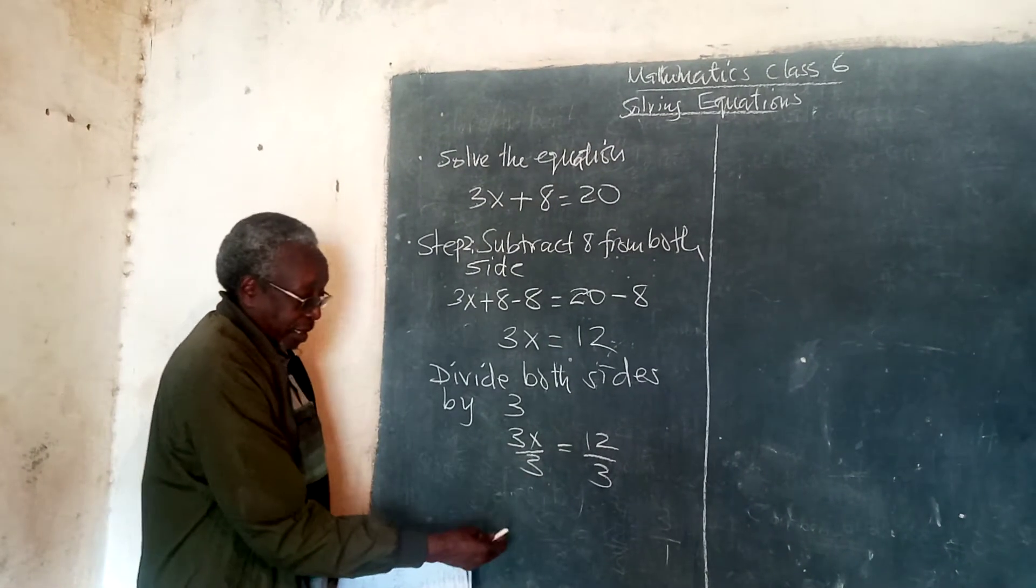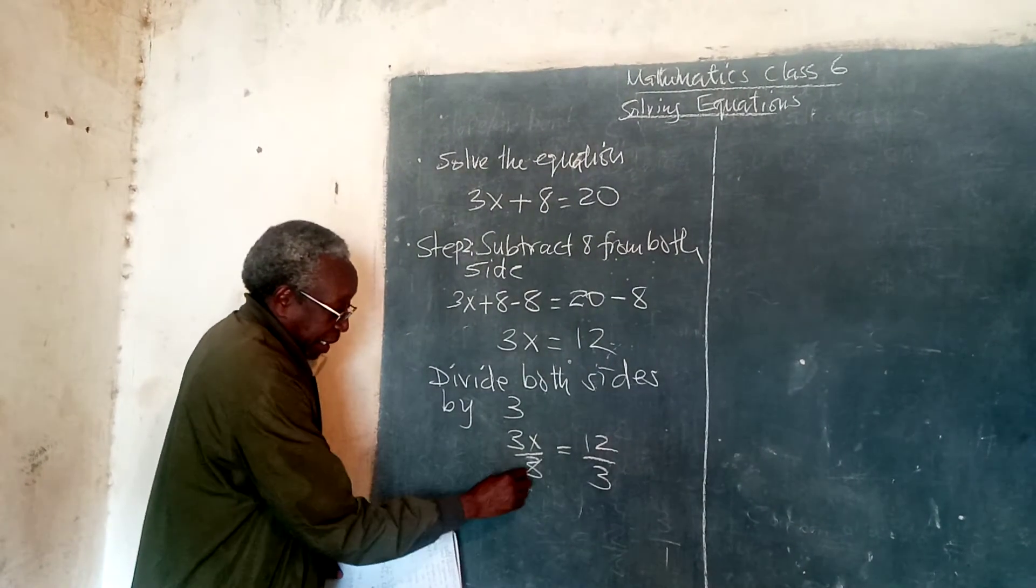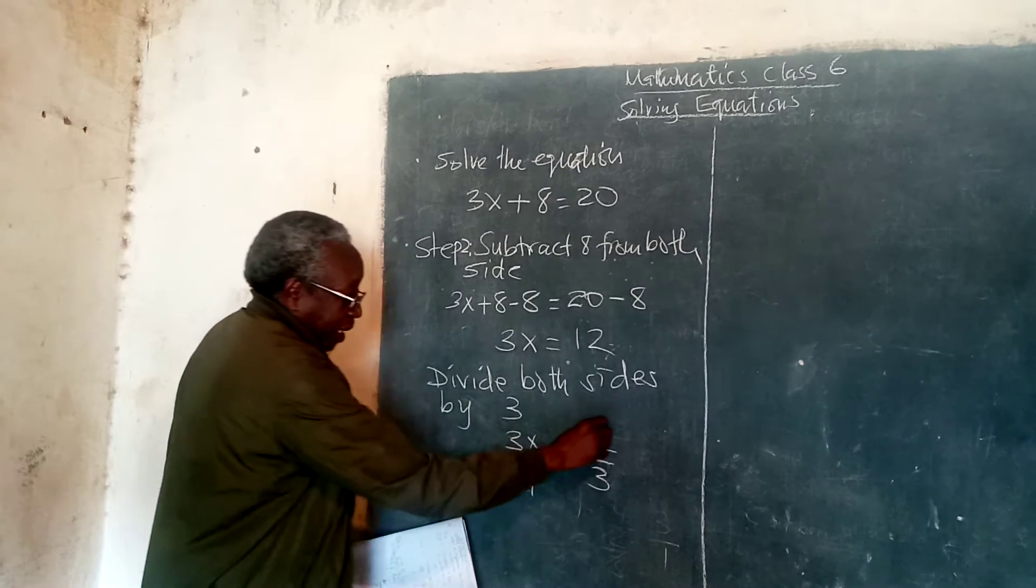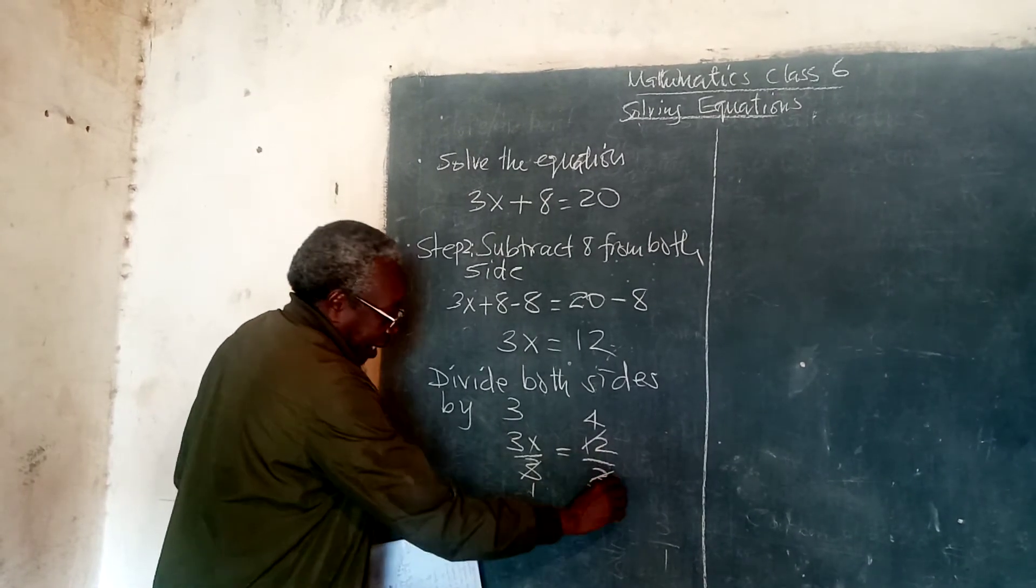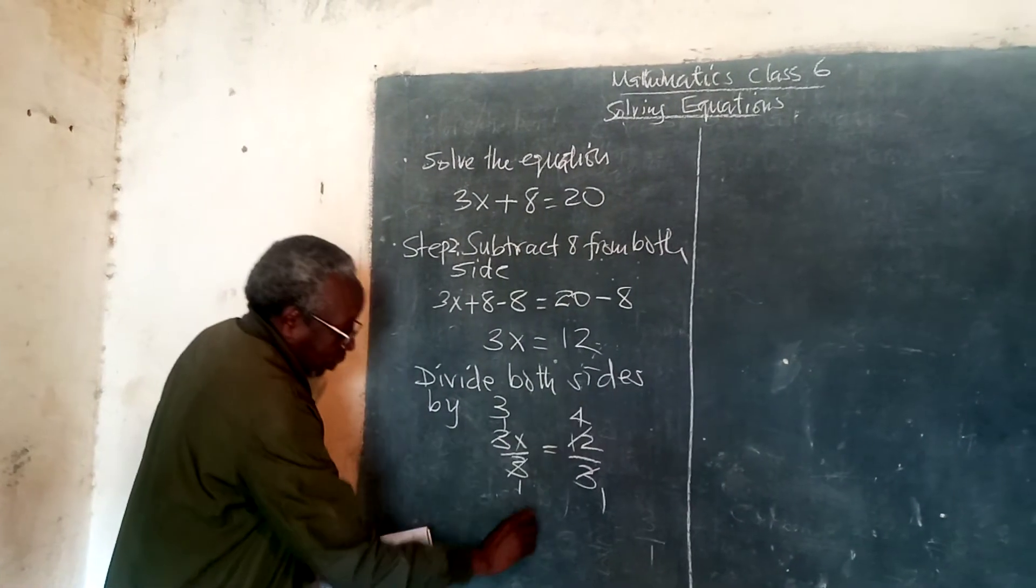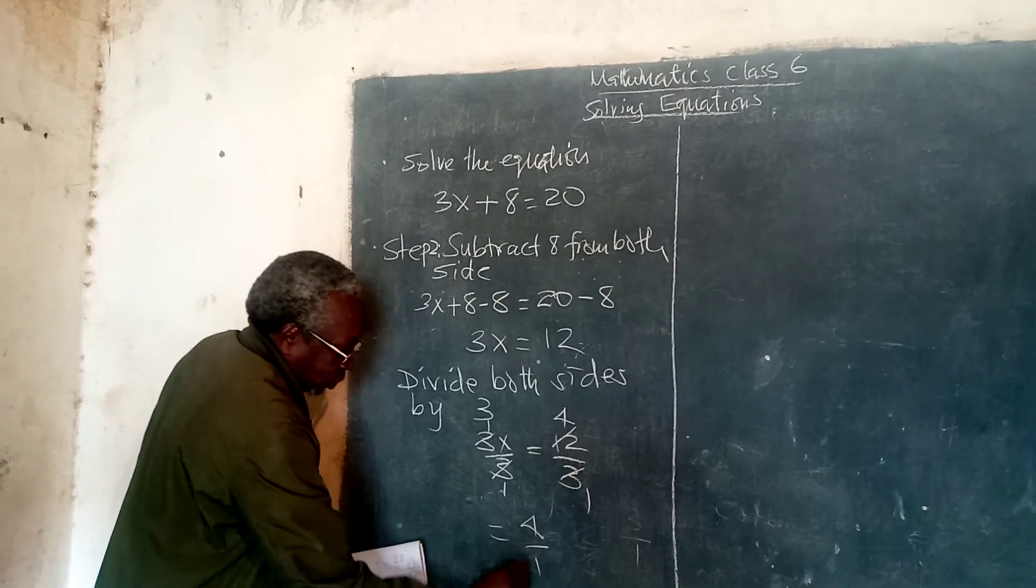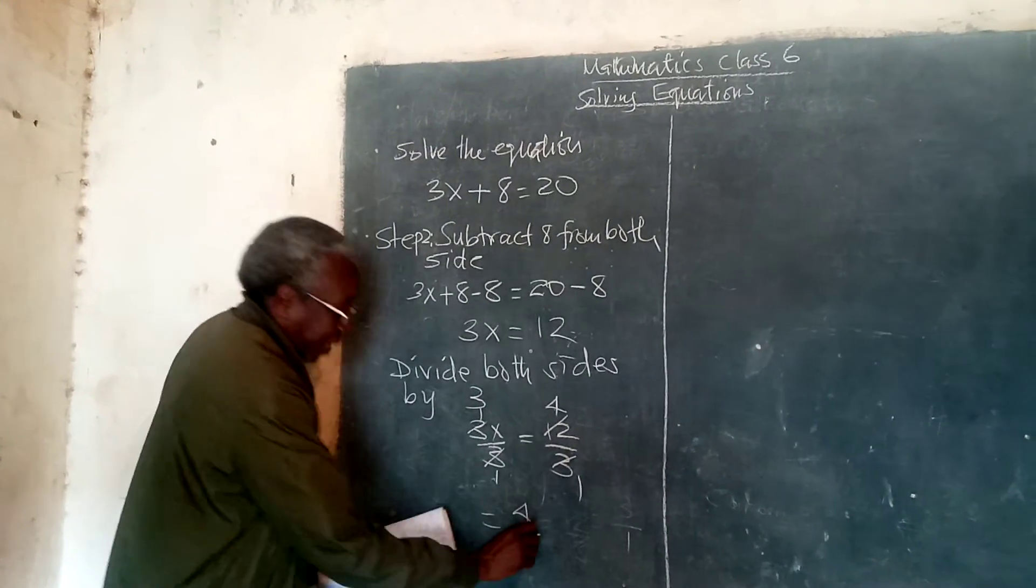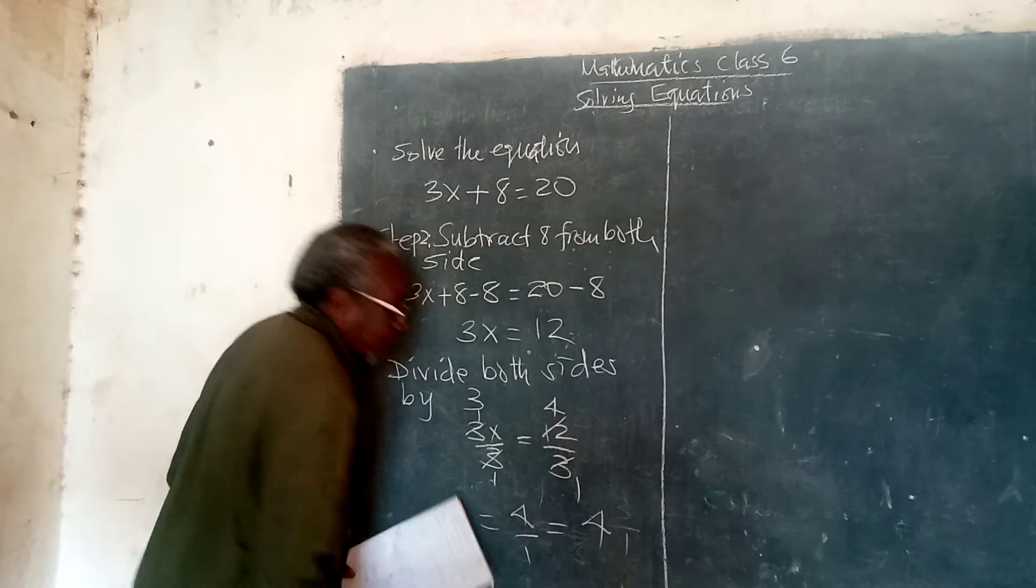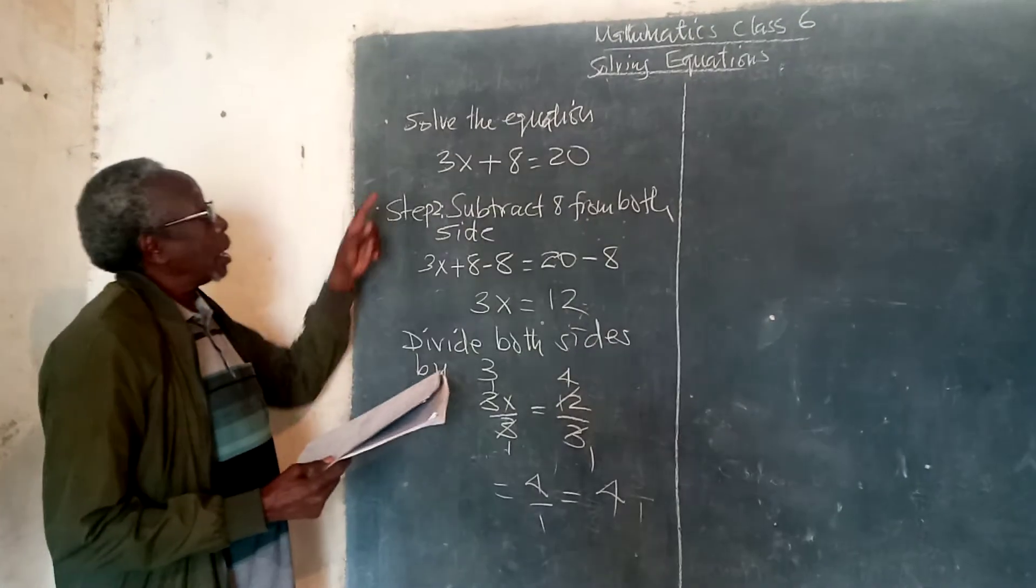And now, the next thing is we simplify here by canceling. We cancel here, by 3 here we get 1, by 3 here we get 4. By 3 here we get 1, by 3 here we get 1. So, we have 1 times 4 is equal to 4 and 1 times 1 is 1. So, this is 4 over 1 and understanding 4 over 1 is 4. Clear? So, that is our first equation.